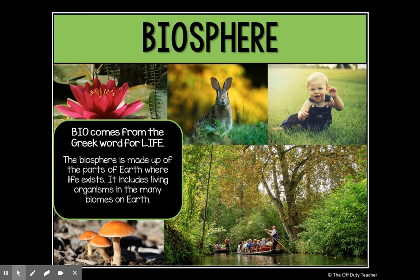Next, we have the biosphere. Bio comes from the Greek word for life, so when you take a biology class you're studying the science of life. The biosphere is made of the parts of Earth where life exists — it includes living organisms in all biomes of the Earth: deserts, tundras, rainforests, and grasslands. Living things can be categorized as things that reproduce, grow, and die, meaning something that has a life cycle. Every piece of living matter on Earth is part of the biosphere.